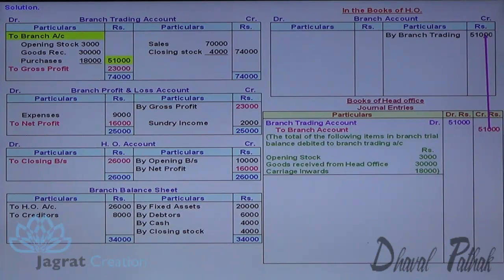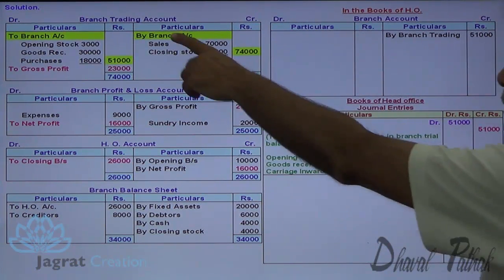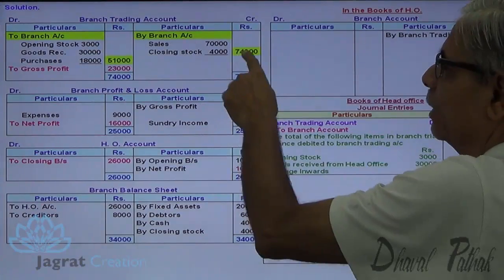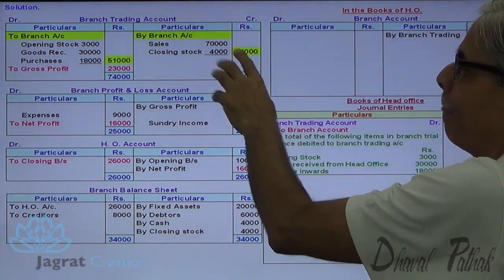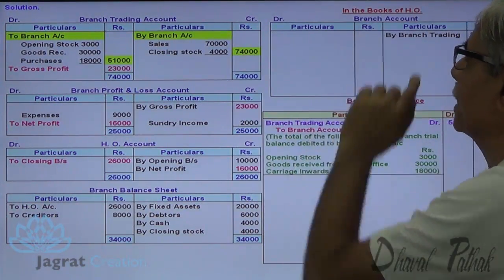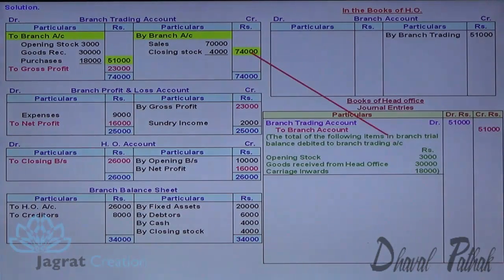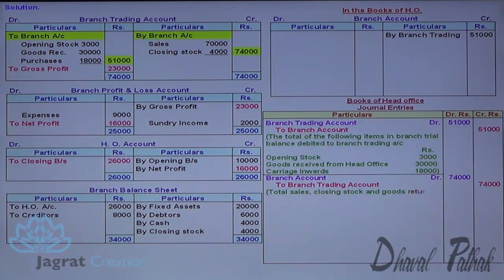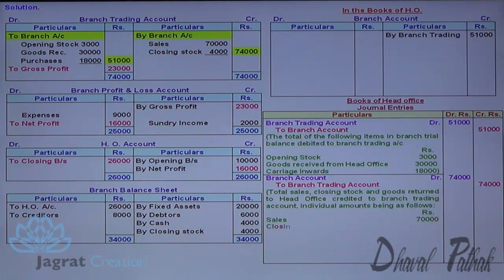Branch account is credited. Next entry: branch trading account credit 74,000 — trading account is to be credited and branch account is to be debited. So, branch account debit to branch trading account credit.